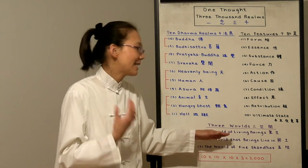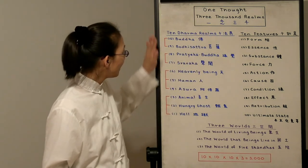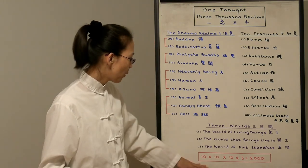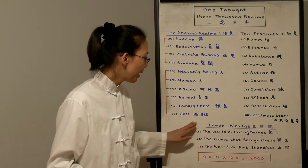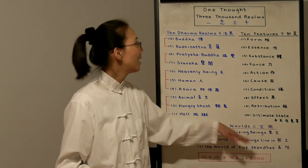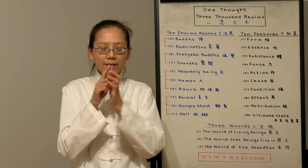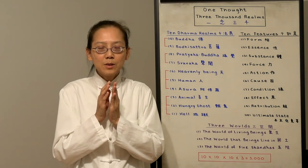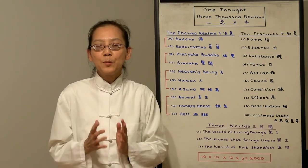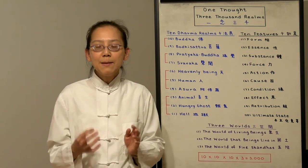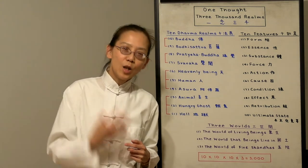So the 3,000 realms consists of 10 Dharma realms. And in every Dharma realm, they include the other Dharma realm. So it's 10 times 10 times the 10 features, times the 3 worlds. That's how we get to 3,000 realms, or 3,000 worlds. These 3,000 worlds are all within our one thought. Because our mind is the absolute Buddha mind. This is the only thing that Buddha wanted to let us know. That we are the Buddha to begin with. We are originally imminent with the 3,000 worlds. So that's the Tiantai Buddhism conveyed in the Lotus Sutra.